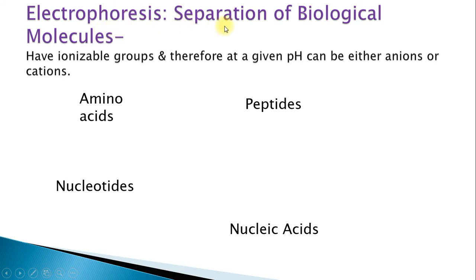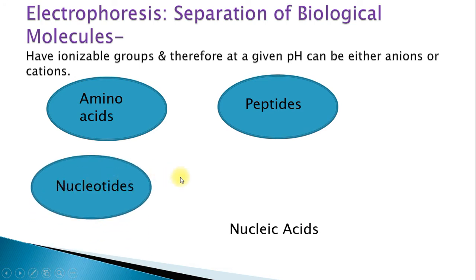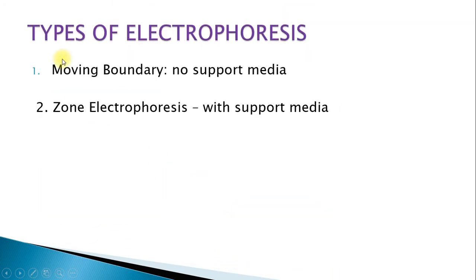In electrophoresis there is separation of biological molecules. Biological molecules have ionizable groups, so they can form ions. At a given pH they can either be an anion or a cation. The biological molecules can be amino acids, peptides, nucleotides, or nucleic acids. Electrophoresis can be broadly classified into moving boundary electrophoresis, where there is no support media, and zone electrophoresis, where there is a support media.